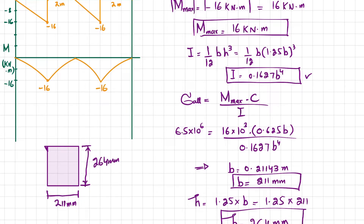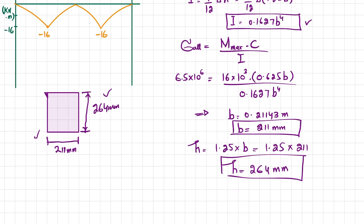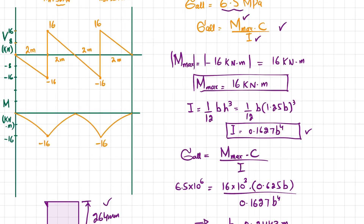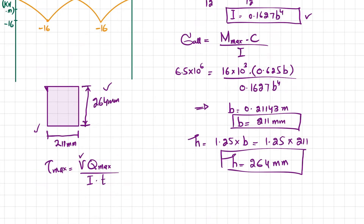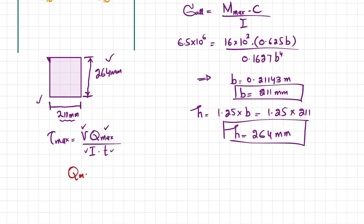To ensure these dimensions are correct, we check the shear stress. We compare the calculated maximum shear stress with the allowable shear stress. The maximum shear stress formula is: τ_max equals V times Q_max divided by I times t, where t is the thickness (width). V_max from the shear force diagram is 16 kilonewton, and t equals 211 millimeters.